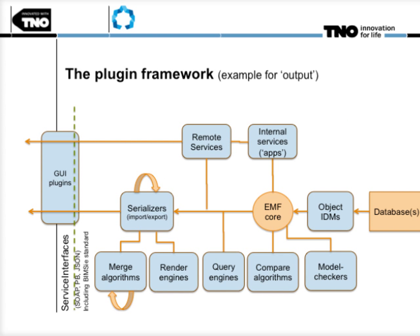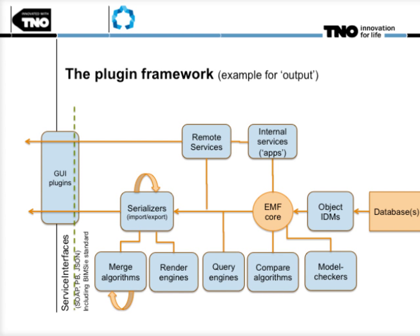How does BIM Server look in general? It's a plugin framework. We have a database on the right side. The core is an Eclipse modeling framework meta model. Most of the other components are all plugins: serializers and deserializers for import-export, merging algorithms, render engines, query engines, compare algorithms, and model checkers. When you install a BIM Server, most of these components already have one or two plugins. For model checkers, there are really simple plugins and simple checkers. Serializers obviously include IFC import-export, and IFC XML is also there by default.